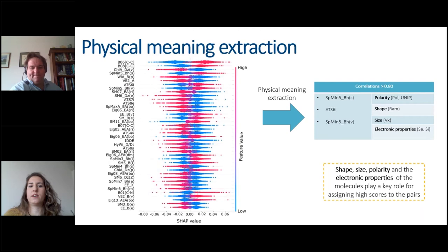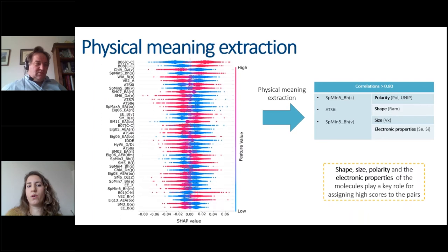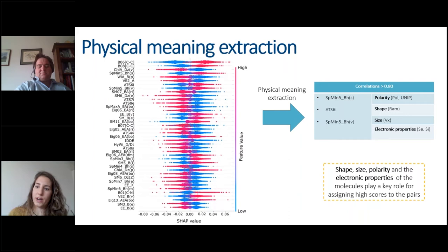If we rank the weights of the features we can observe that those with high Shapley values played a key role for giving a high score to the predictions. As most of the Dragon descriptors are not very well accessible, we try to extract physical meaning by taking the correlation between the high scoring Dragon descriptors and some descriptors that have an easily understandable physical meaning. Out of that we found out that our highly weighted descriptors are correlated with shape, size, polarity and the electron properties. So these were the descriptors that played a key role in giving high scores to the predictions.